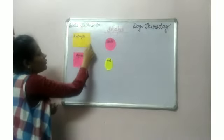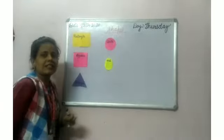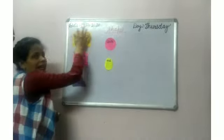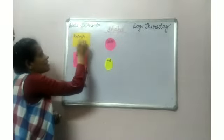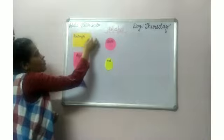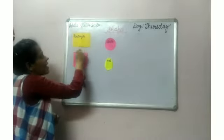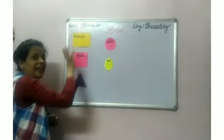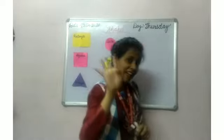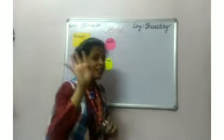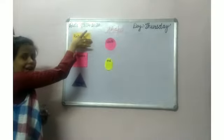I want to tell you about rectangle. How many sides does a rectangle have? A rectangle has 4 sides — 1, 2, 3, 4. And a rectangle has how many corners? A rectangle has 4 corners. And 2 opposite sides are equal.